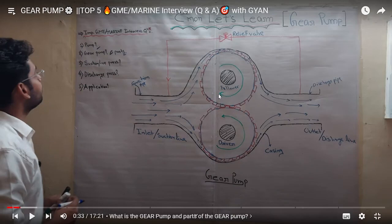Tell me — other than driver and follower gear, what else do you see in the gear pump? A student mentioned the relief valve. You see a relief valve in gear pump, but not in centrifugal pump. What is the reason for not having a relief valve in a rotodynamic pump but having one in a positive displacement pump?